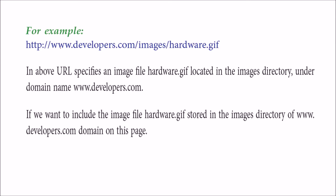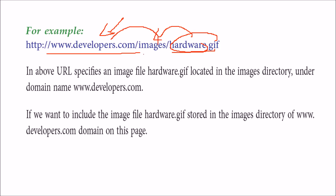This is an example of the absolute URL. In this URL, it specifies an image file hardware.gif. This is located in the images directory under the domain name www.developers.com. So if you want to include the image file stored in the images directory of www.developers.com on this page, this is what you are going to use.